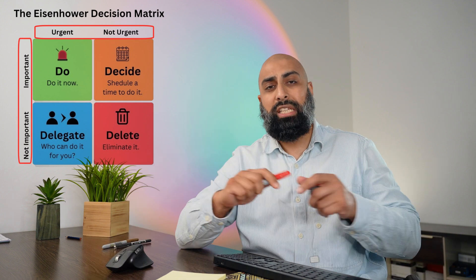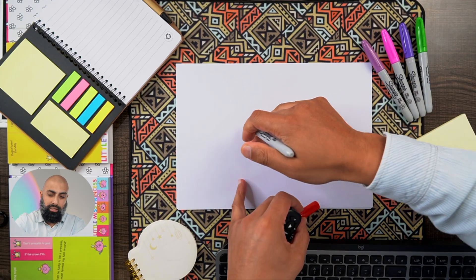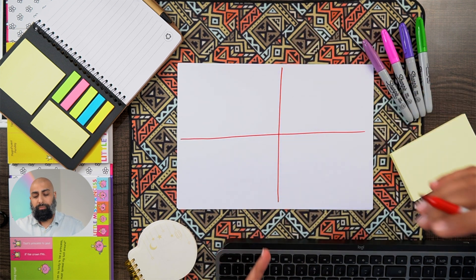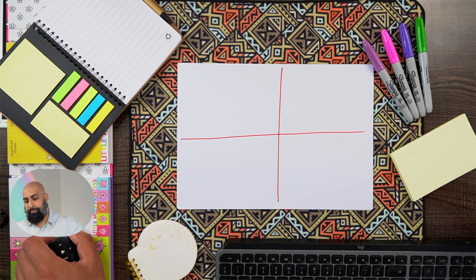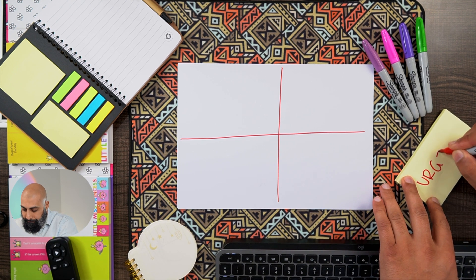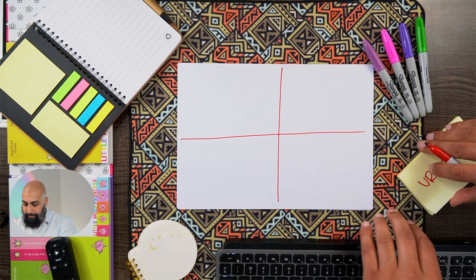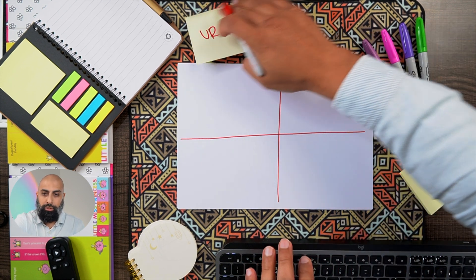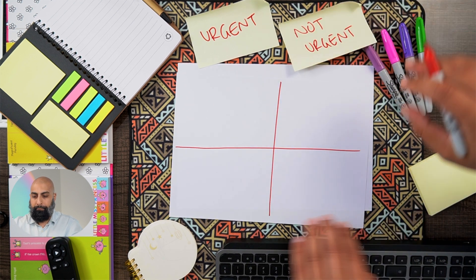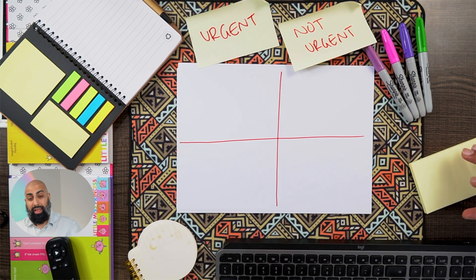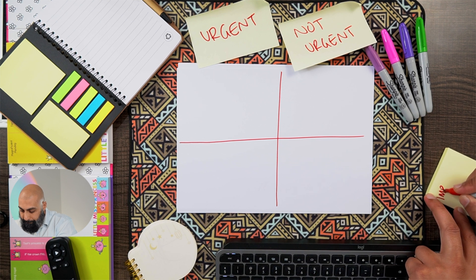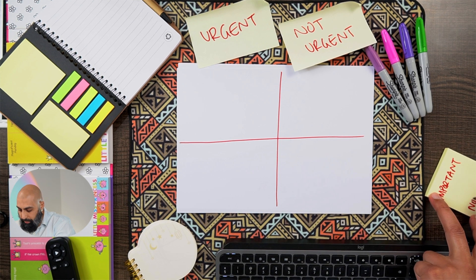Today I'm going to label it so you can see what this looks like. We divide this paper up into quarters. The labels you need to know are: urgent and not urgent across the top, and important and not important down the side.